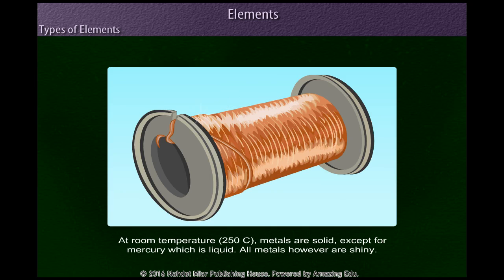At room temperature, 25 degrees Celsius, metals are solid, except for mercury which is liquid. All metals, however, are shiny.